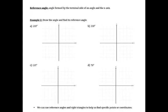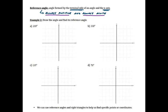The angle formed by the terminal side and the x-axis is called the reference angle. The reference angle in any angle we draw is always positive and always acute — always between 0 and 90 degrees.